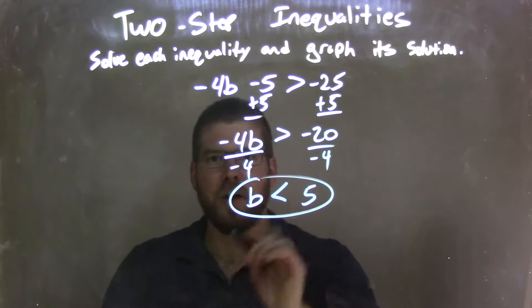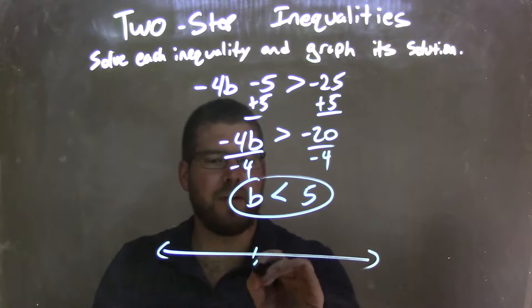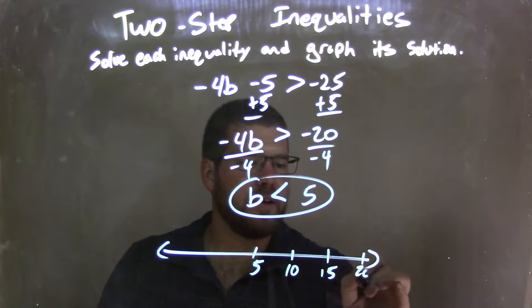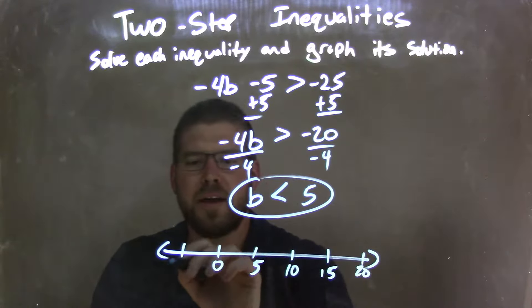And there we have it. So now I need to graph it. I'm going to graph here, let's put 5 right in the middle, and let's mark 10, 15, 20, 0, and negative 5.